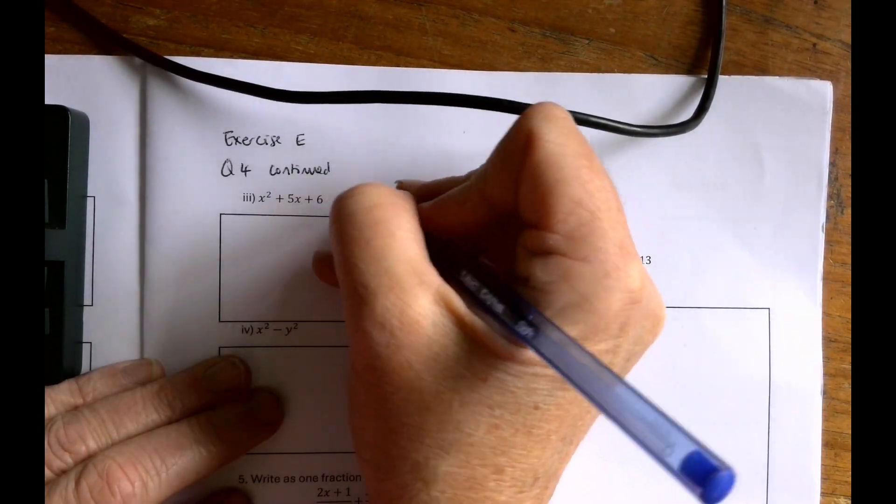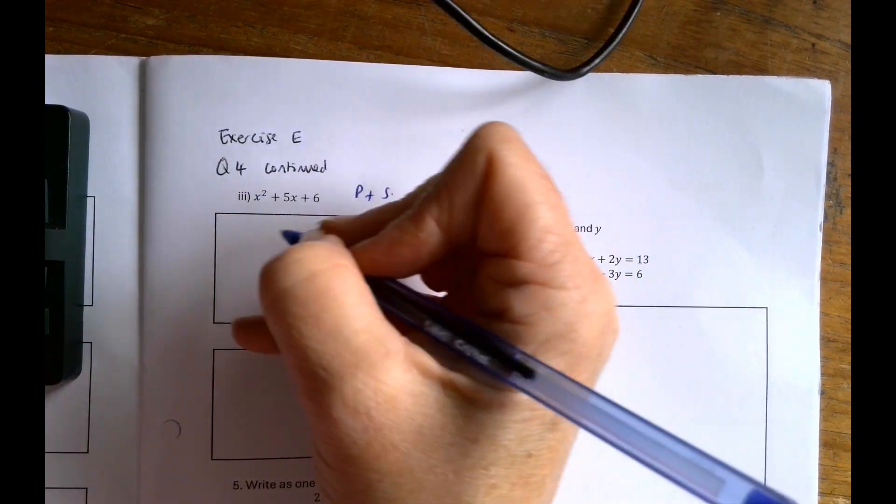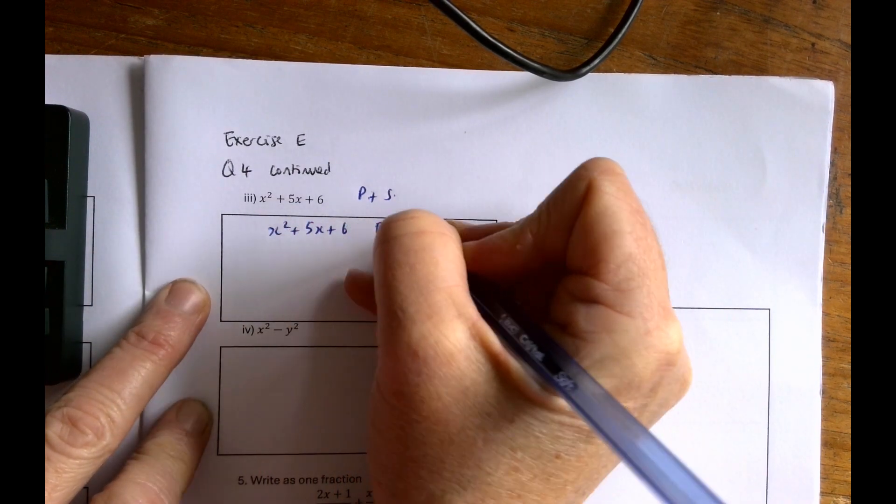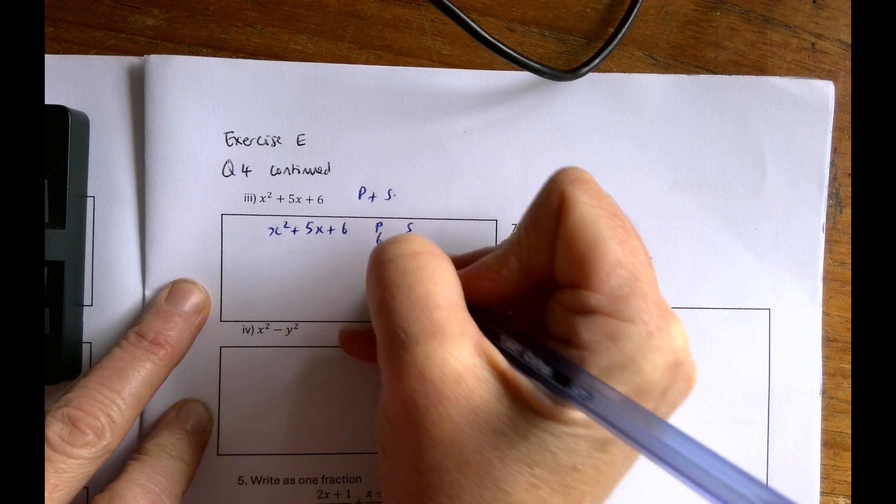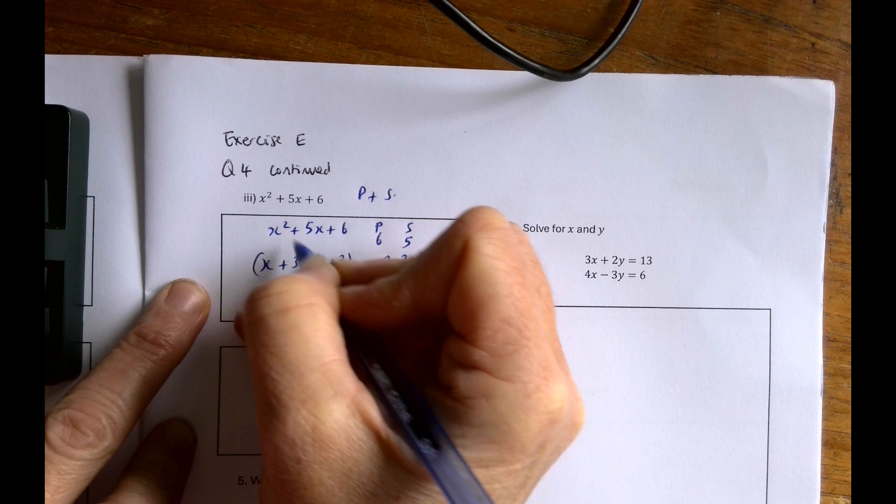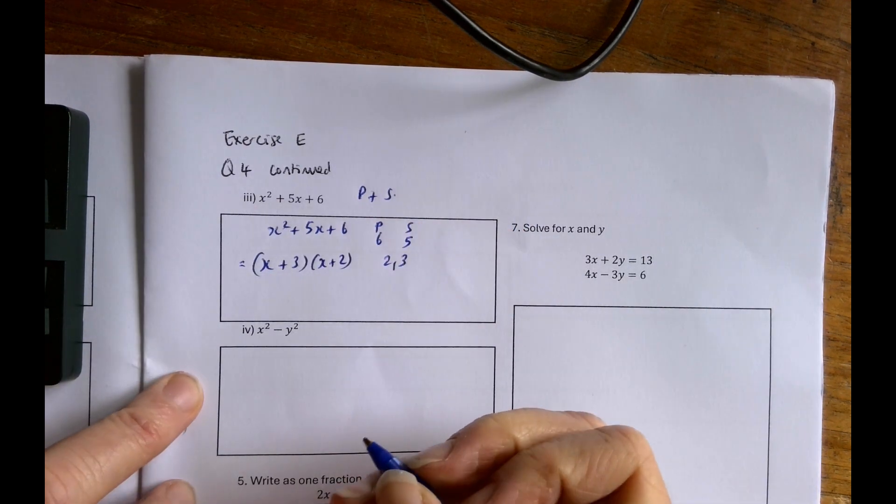This is a product in sum or a quadratic, whichever you like to call it. So x squared plus 5x plus 6. We're still factorizing. Product is 6, sum is 5, 2 and 3. And I'm going to go straight to the brackets because when it's a single x squared I can do that without any problem.